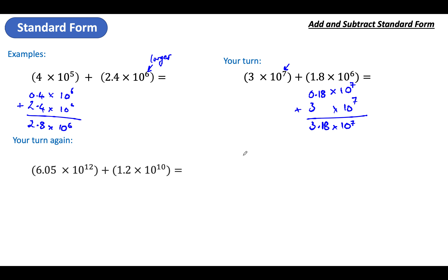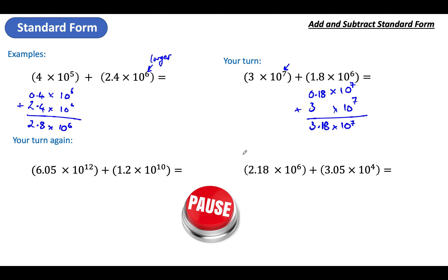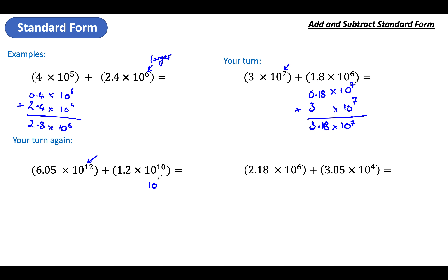Two more for you to do — pause the video, unpause when you're done. Did you spot that this is to the power of ten and this is to the power of twelve? This is the larger number. I need them to match, so it's got to be to the power of twelve. That means my number needs to be two places smaller because the power got two digits bigger. So 0.012. It's really important that however many places the power got bigger, that's how many places the number needs to do the opposite and get smaller. So 6.05 times ten to the power of 12.